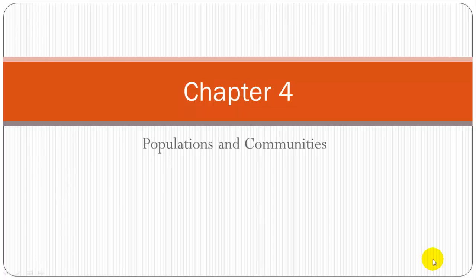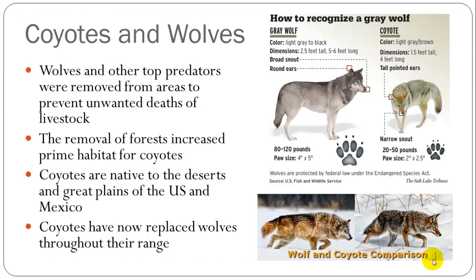This chapter is going to talk about populations and communities, and we're going to focus on a couple of species — the coyotes and wolves — and kind of what's happened in the United States because of practices of early colonization.